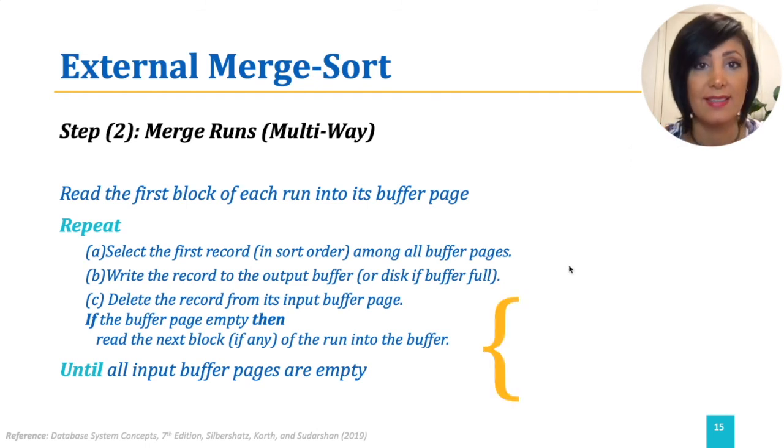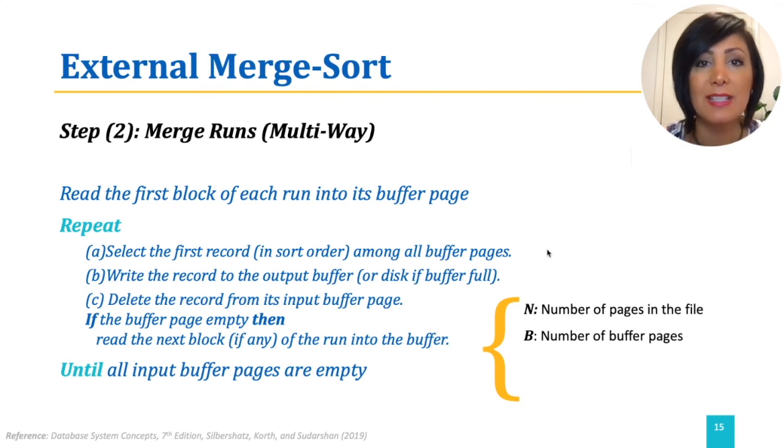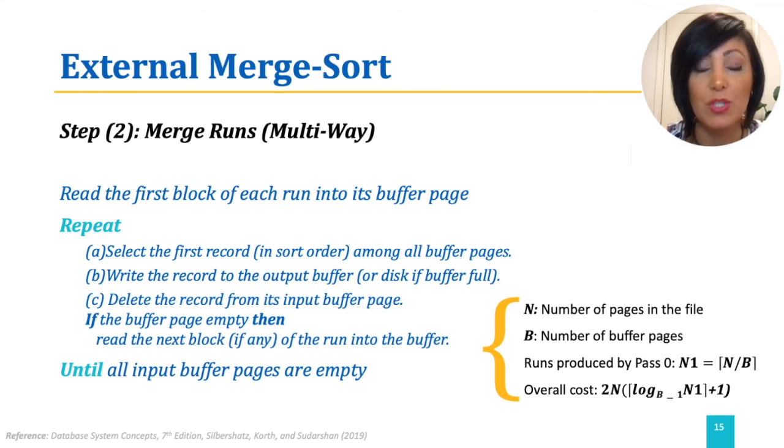If N is the number of pages in the file, and B is the number of memory buffer pages available to us, pass 0 will produce N divided by B one-page runs. The number of passes with similar approach we had for a two-way run will be logarithmic, but to the base of B-1. This is because we use B-1 buffer pages for input, and the remaining buffer for output to perform a B-1-way merge. The overall cost will be the number of IOs required, which similarly is the number of passes times 2N. This is because every page in the file is read, processed, and written out in every pass.